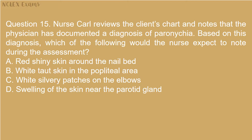Question 15. Nurse Carl reviews the client's chart and notes that the physician has documented a diagnosis of paronychia. Based on this diagnosis, which of the following would the nurse expect to note during the assessment? A. Red, shiny skin around the nail bed. B. White, taut skin in the popliteal area. C. White silvery patches on the elbows. D. Swelling of the skin near the parotid gland.